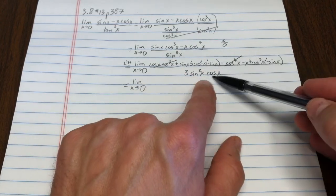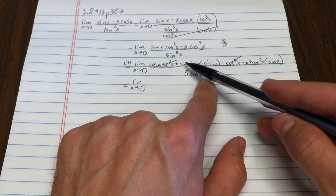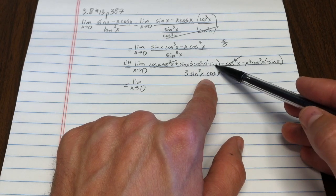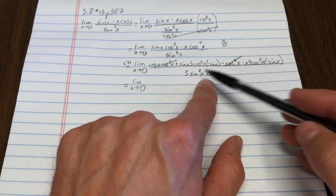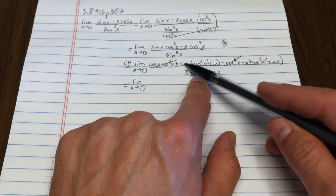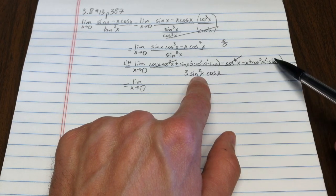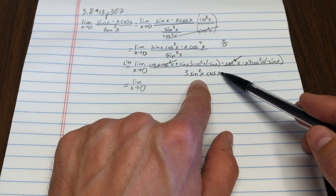This has a sine, another sine, sine squared. This only has one sine, this has sine squared. So I could divide both the numerator and the denominator by sine x.